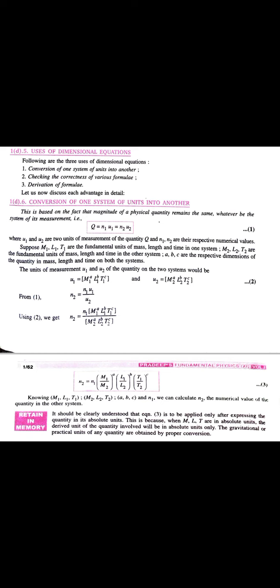Suppose M1, L1, T1 are the fundamental units of mass, length and time in one system. M2, L2, T2 are the fundamental units of mass, length and time in the other system. ABC are the respective dimensions of the quantity in mass, length and time on both the system.